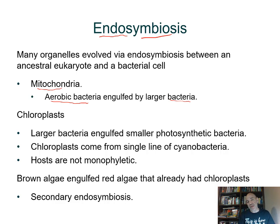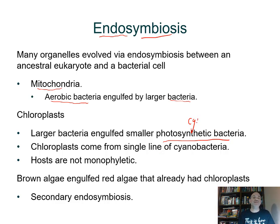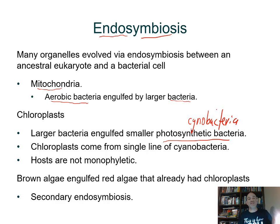For chloroplasts, the same idea: a bacterium engulfs a photosynthetic bacterium — a common ancestor to the cyanobacteria we see today. Cyano means blue-green, so cyanobacteria are photosynthetic bacteria that have a lot of the same metabolism as a chloroplast. The chloroplasts we see today seem to come from one endosymbiotic event.